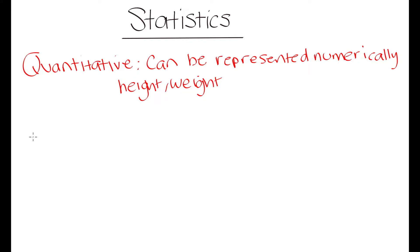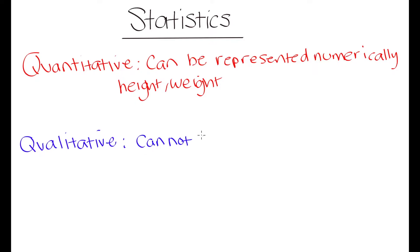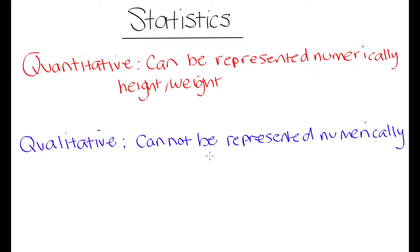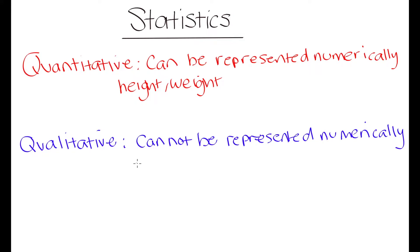Our other type of data is qualitative data. Qualitative data is data that cannot be represented by numbers. That's going to be things like the favorite colors of students in a classroom, or the languages spoken by students — things that we cannot represent using numbers alone.